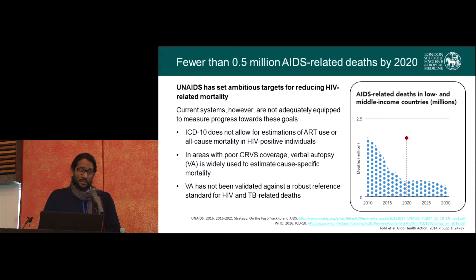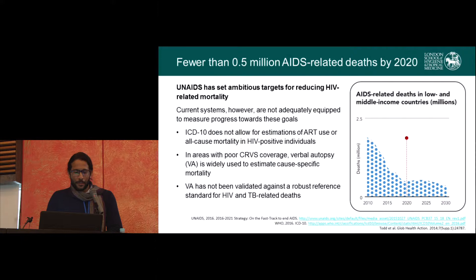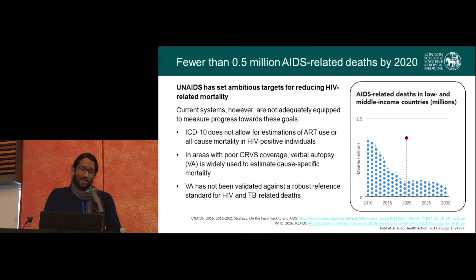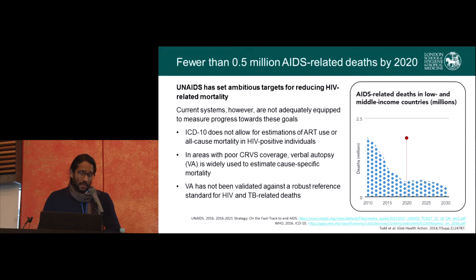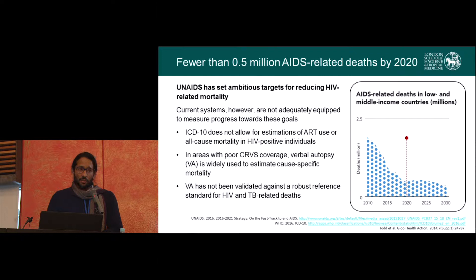The UNAIDS targets aim to reduce HIV-related deaths drastically in the next few years, with an interim target of less than half a million deaths by 2020. We had a million deaths just last year, so that's quite a drastic reduction. One of the problems is that the way we count HIV-related mortality is not particularly robust — we only count HIV-associated deaths if we know them to be HIV-associated. Civil registration systems are not particularly robust in these parts of the world, and as an interim measure, verbal autopsy is used to fill in the gaps, primarily at health and demographic surveillance sites in rural areas.